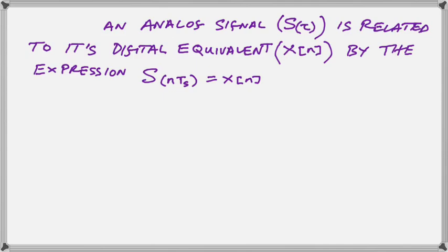An analog signal is related to its digital equivalent by the expression shown here. n times TS designates a particular point on the timeline, where n is a changing integer, and digital time proceeds in multiples of the digital period, TS, to produce the numbers in the array xn.